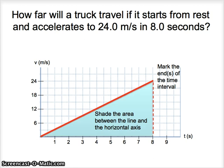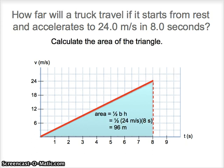To find the area of a triangle, of course, we need to take 1 half times the base times the height. And so in this case, that would mean the height of 24 meters per second, the base of 8 seconds, and then that comes out to be 96 meters.